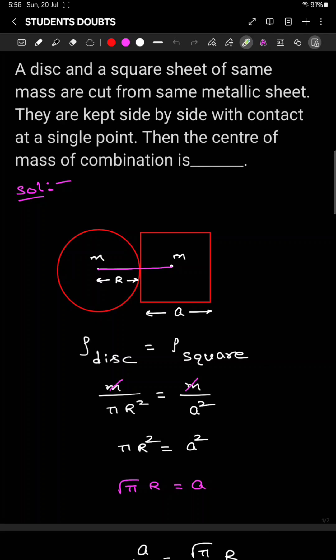Here in this question, a disc and a square sheet of same mass are cut from same metallic sheet. Same metal sheet meaning same material, density same.